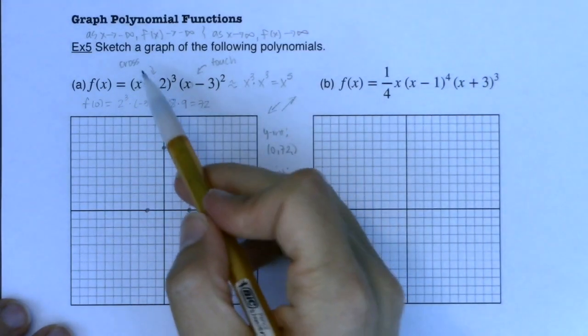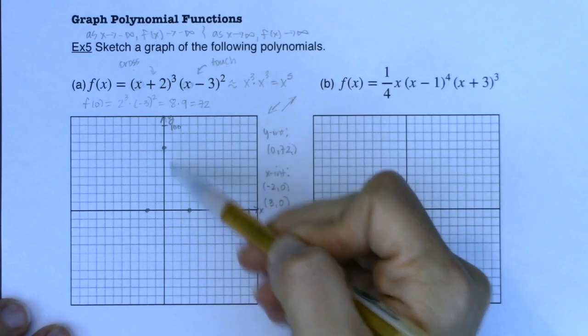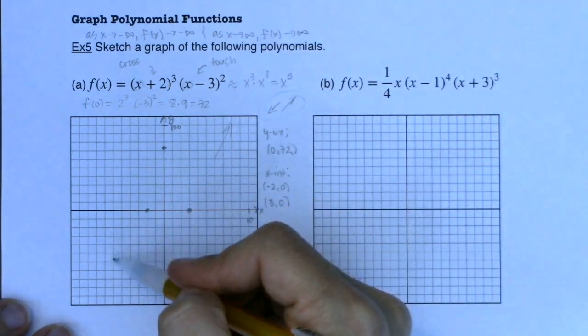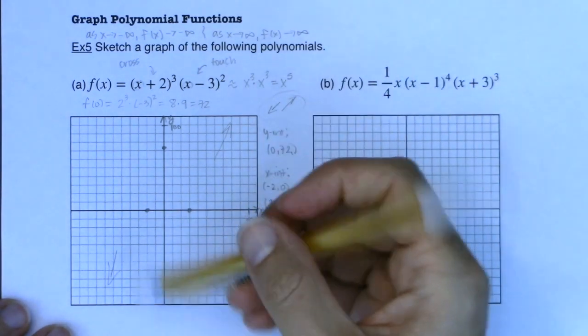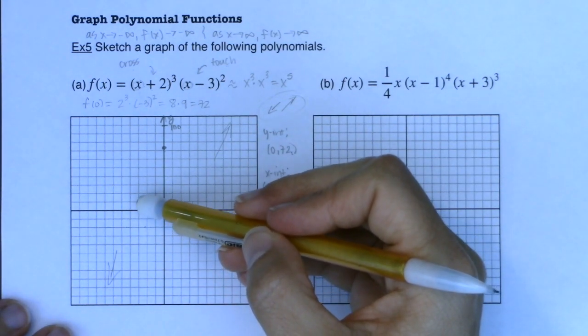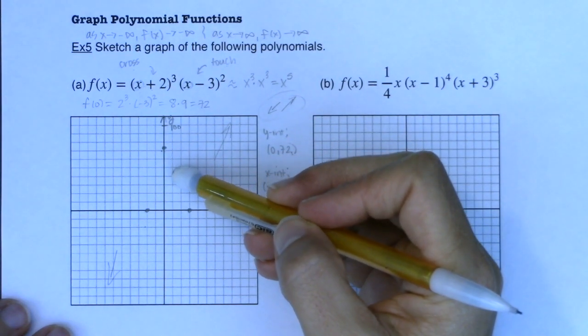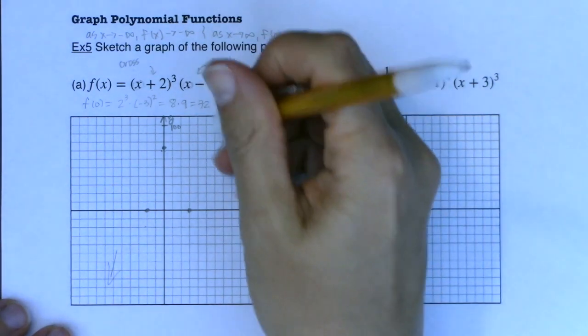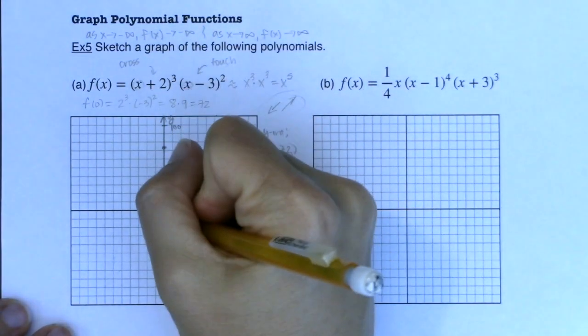So with that, that's great, but we still have some more information we can glean. In terms of the y-intercept, if I wanted to figure out the y-intercept, I would let x equal 0. Well, if I was going to do f of 0, that would be 2 cubed times negative 3 squared. So that would ultimately be 8 times 9, which would be 72. So I have a pretty large y-intercept at 0 comma 72. And I'll keep that in mind when I go to scale my axes.